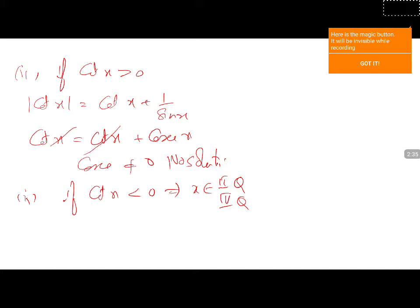That will give us minus cot x. Minus cot x is equal to cot x plus 1 by sin x. Take this cot x to that side: 2 cot x plus 1 by sin x is 0. Here I will write 2 cos x by sin x plus 1 by sin x is 0.